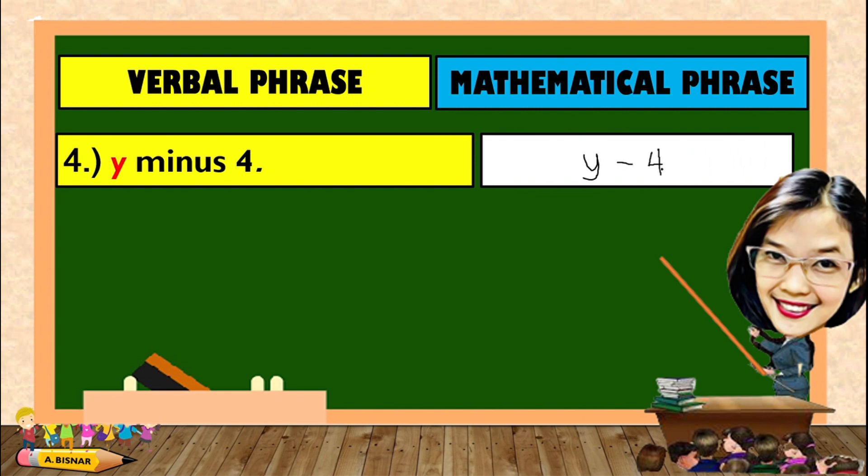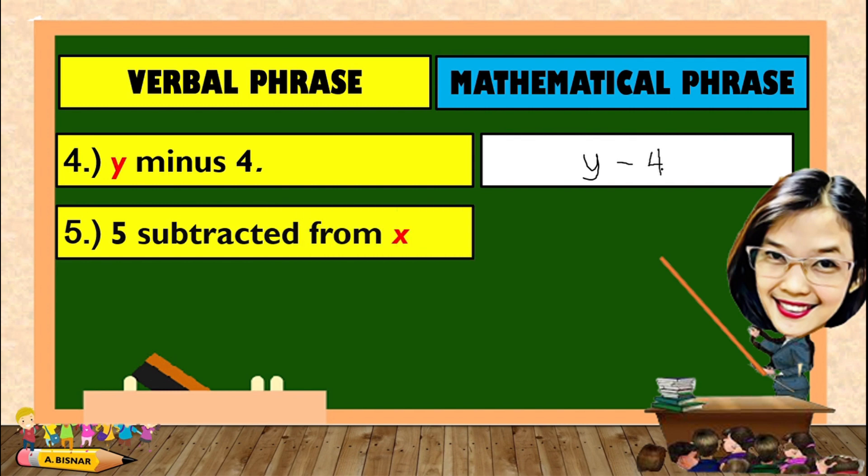Another, 5 subtracted from X. As you observe, it is 5 being subtracted from what? From X, which means we will subtract 5 from X.